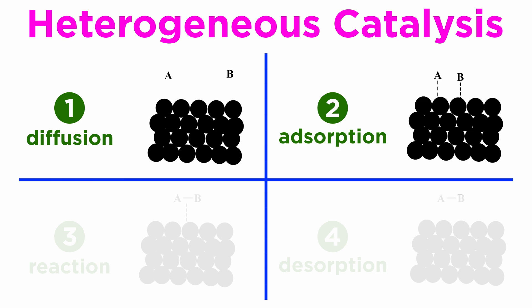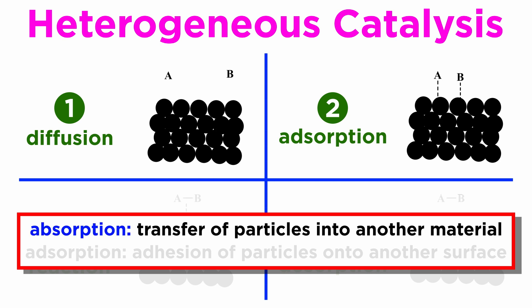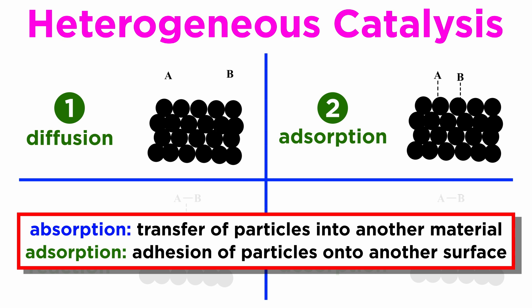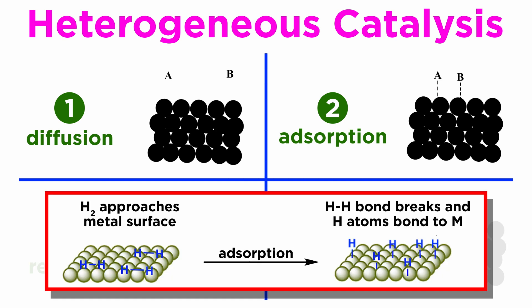In most cases, they will then become adsorbed on the surface. Remember, adsorption is different from absorption, in that absorption involves the transfer of particles into another material, like water into a sponge, while adsorption involves the adhesion of particles onto the surface of another material. Adsorption consists of a variety of attractive forces, ranging from very weak van der Waals forces to very strong forces — in some cases actual covalent attachment of the adsorbed molecule with cleavage of a former bond, as is the case with hydrogen gas during hydrogenation.